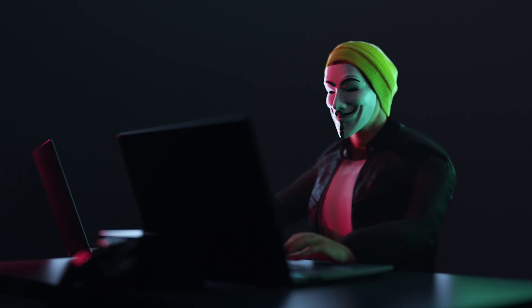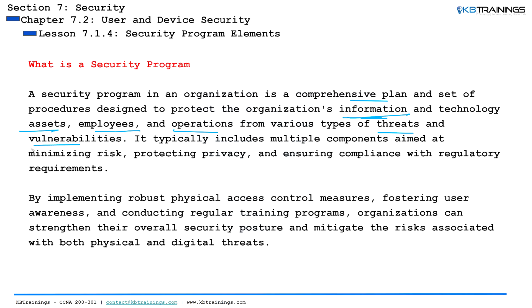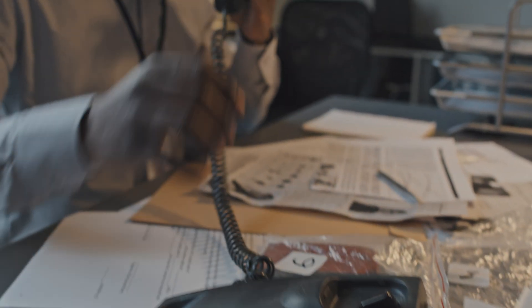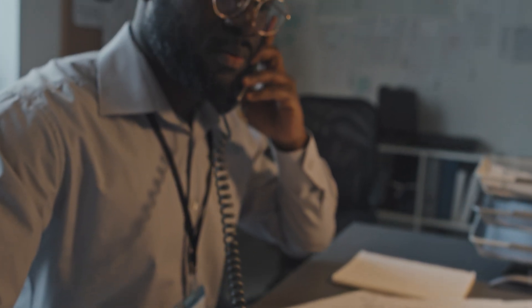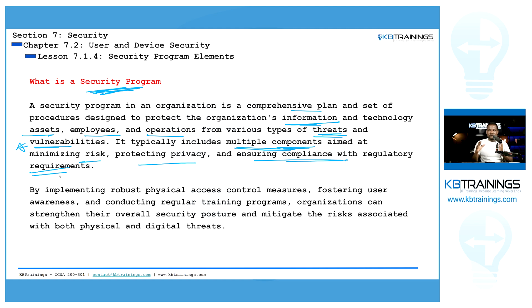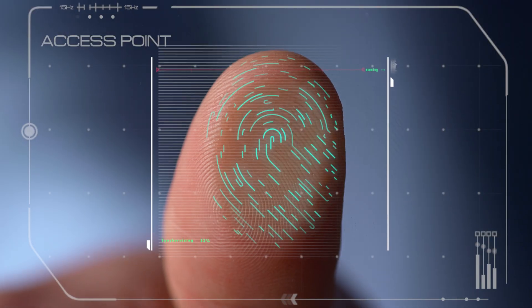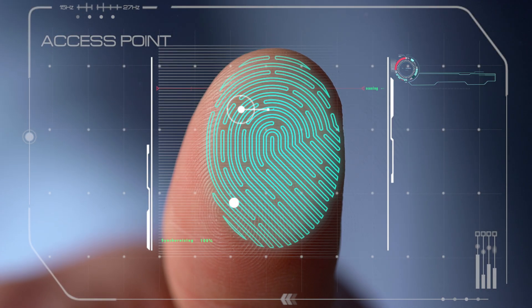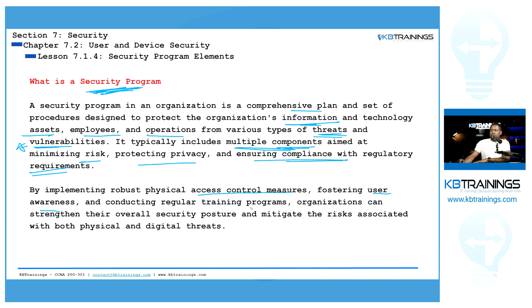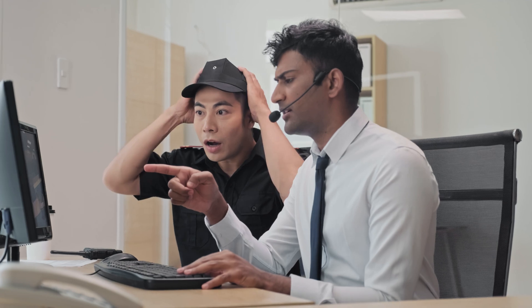Threats and vulnerabilities need to be known, and by having a security program, your organization is going to be ready to mitigate all of them. Not everybody inside the company will make up their own rules for protecting the company — everything is laid out inside the security program. By implementing elements such as access control measures, user awareness, and conducting regular training programs, you strengthen your overall security posture and mitigate risks associated with both physical and digital threats.